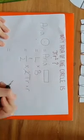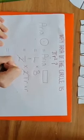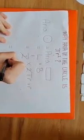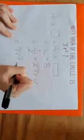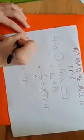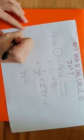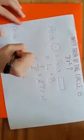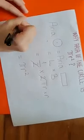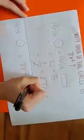Now this two will cancel out and we will get pi r square. So we prove that area of the circle is pi r square. Thank you.